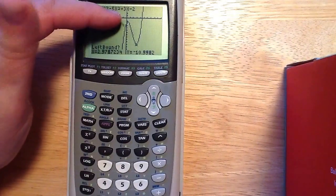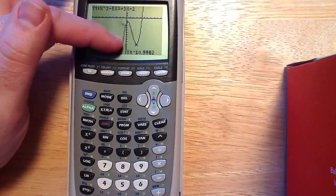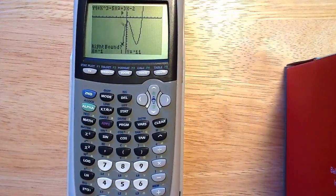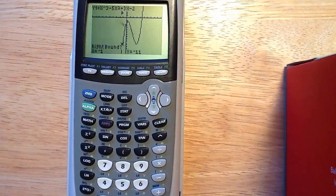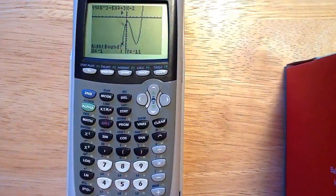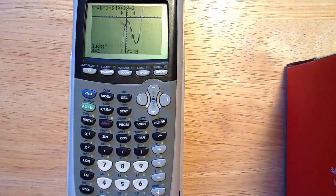I'm going to pick a point that I know is to the left of that minimum, and it looks like if I picked negative 1, that would be over here down in the bottom. So I'm going to type in negative 1. I'm confident that is to the left of that maximum point. And then I'm going to go to the right of it, like maybe at 2. I can type in 2. Press enter.